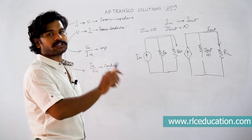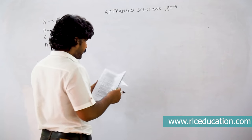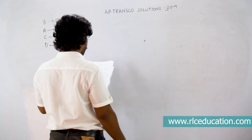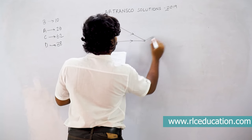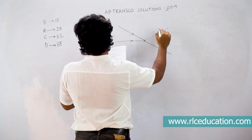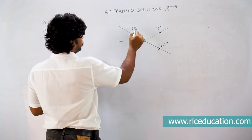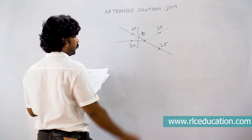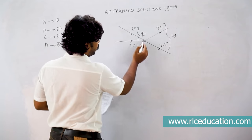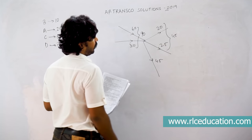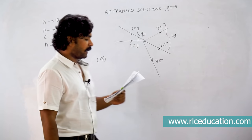Q10 (B:10, A:26, C:62, D:38): At a node in a power system, inputs are 60 MW and 30 MW (total 90 MW entering). Outputs are 20 MW and 25 MW (total 45 MW leaving). By KCL, for power balance another 45 MW must leave the node. So option B — 45 MW leaving — is the right answer.